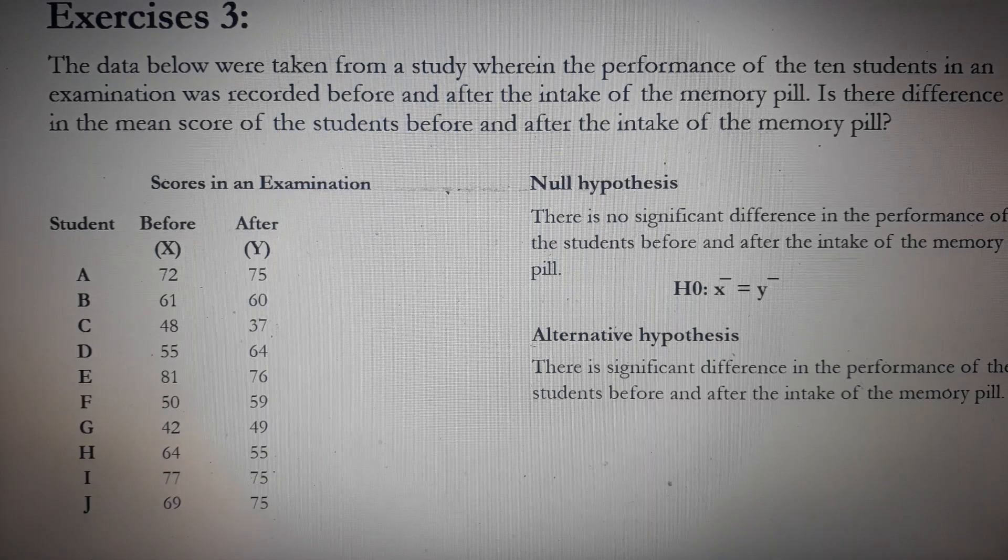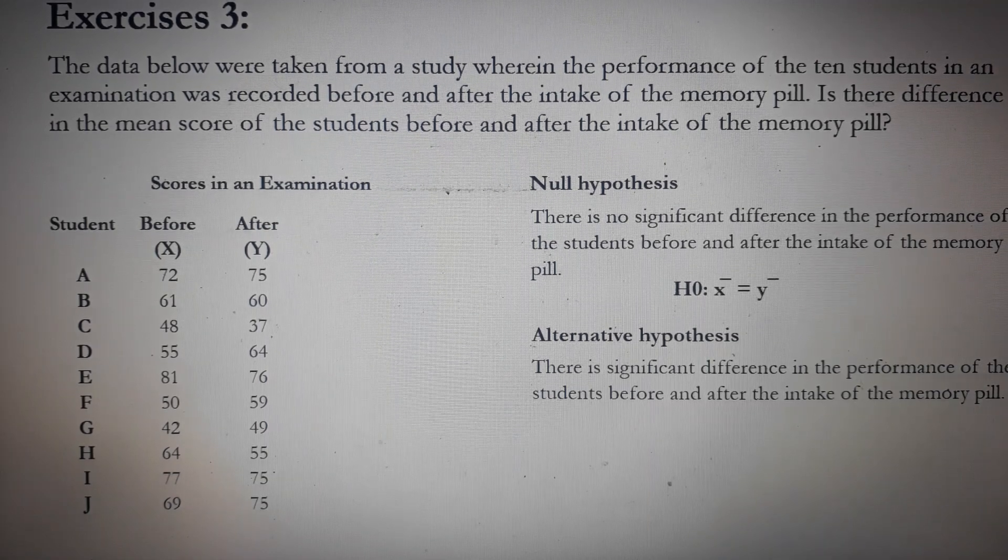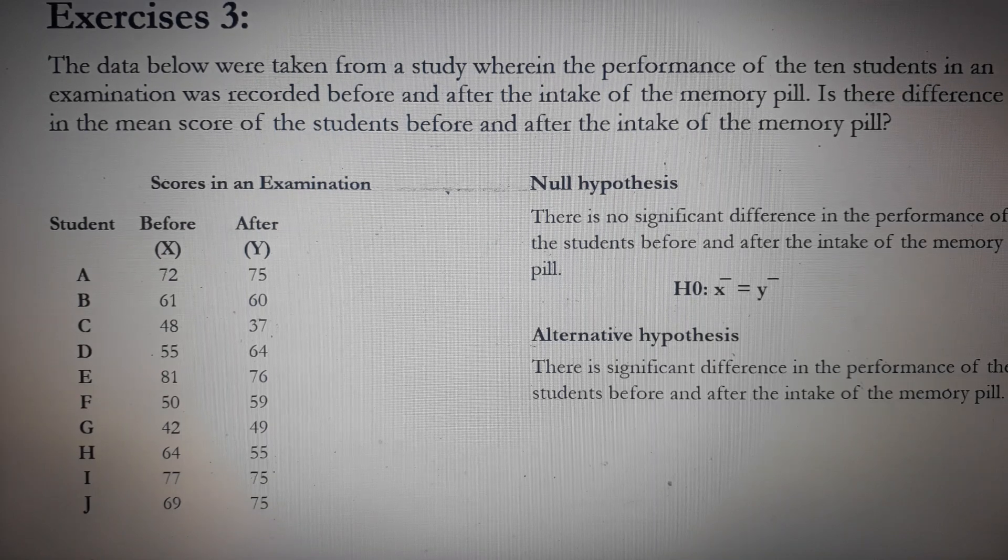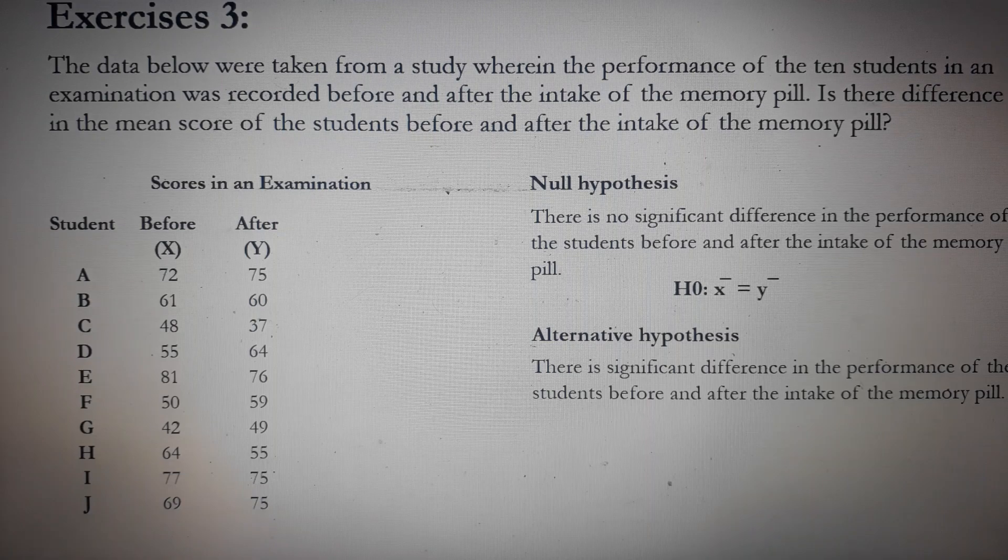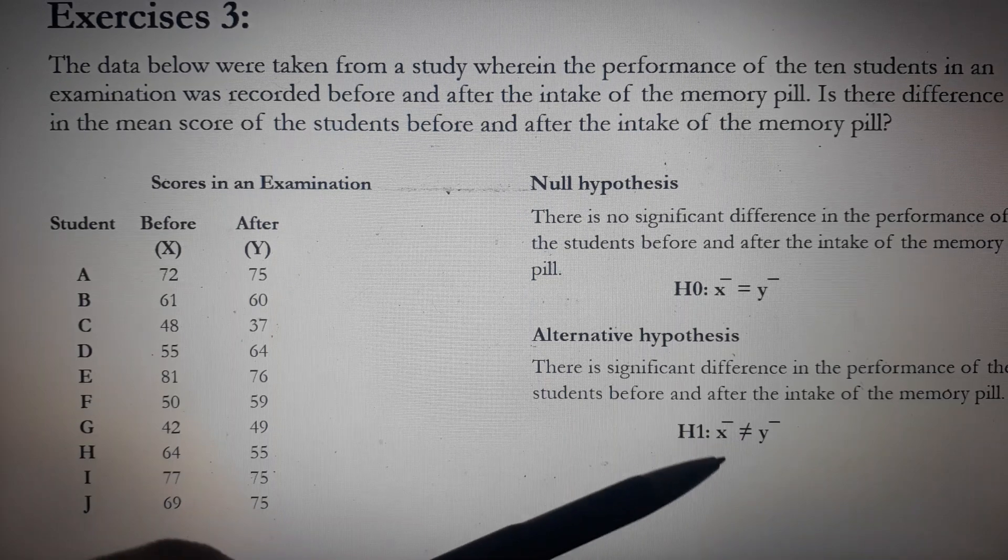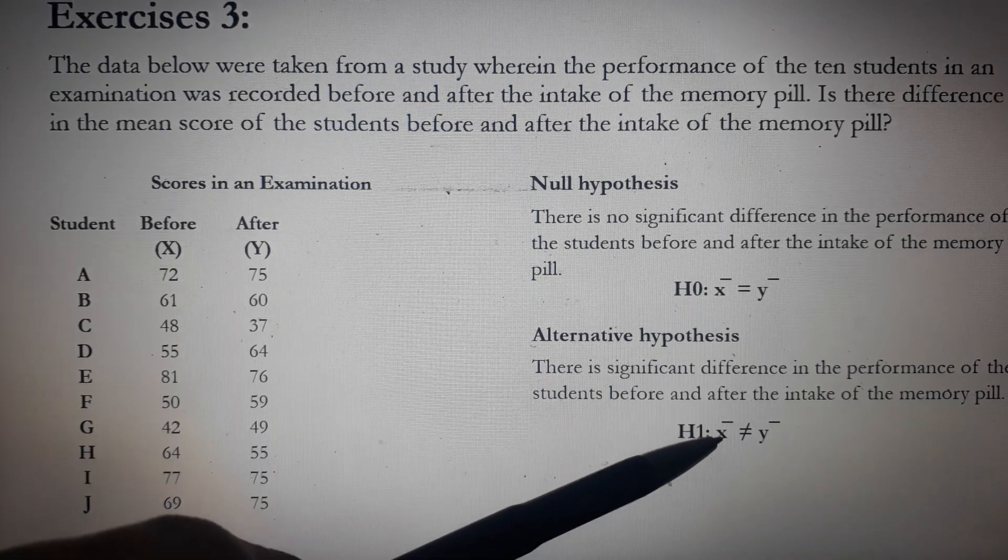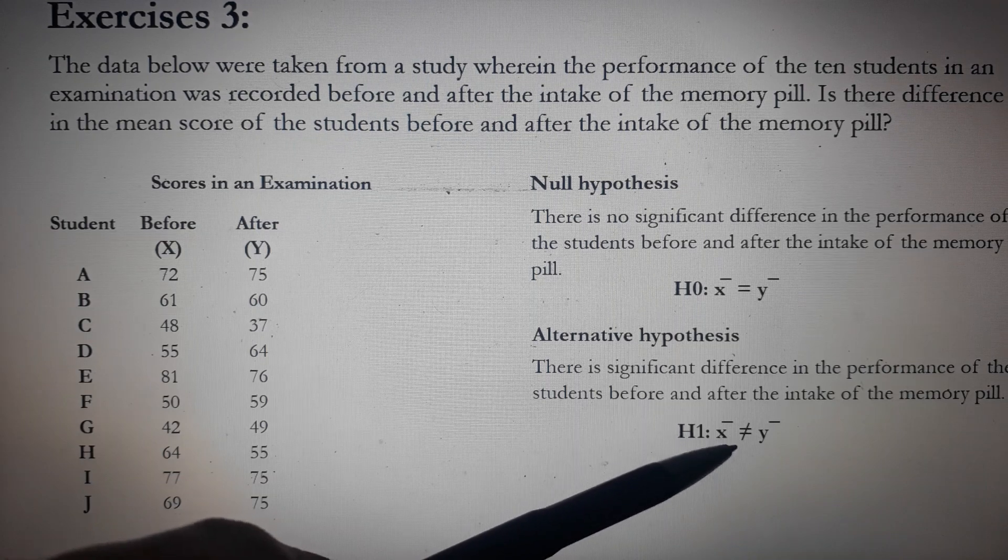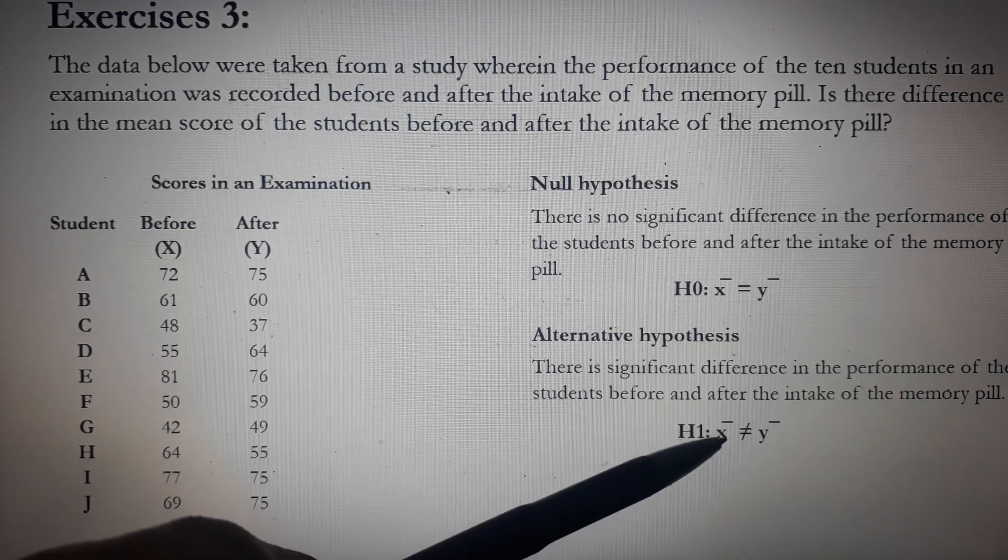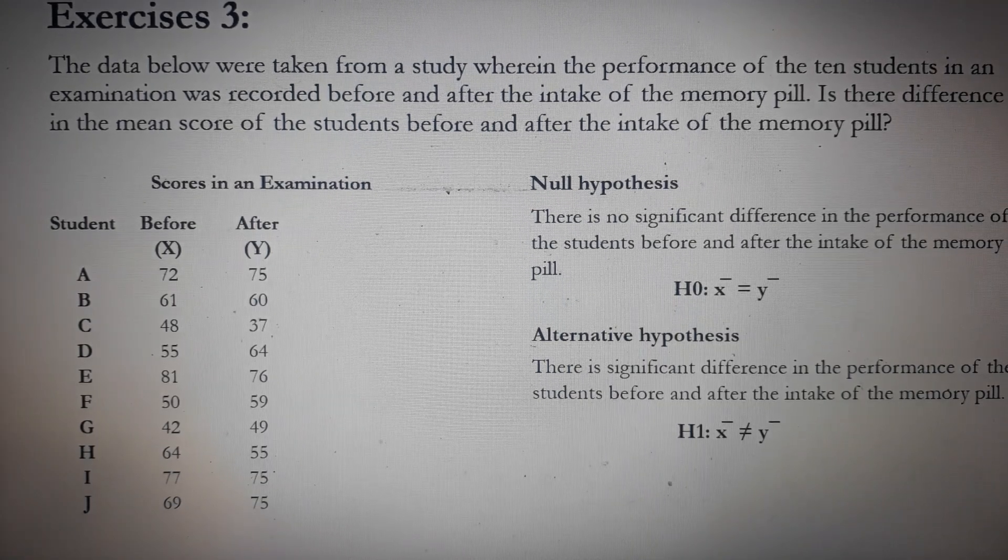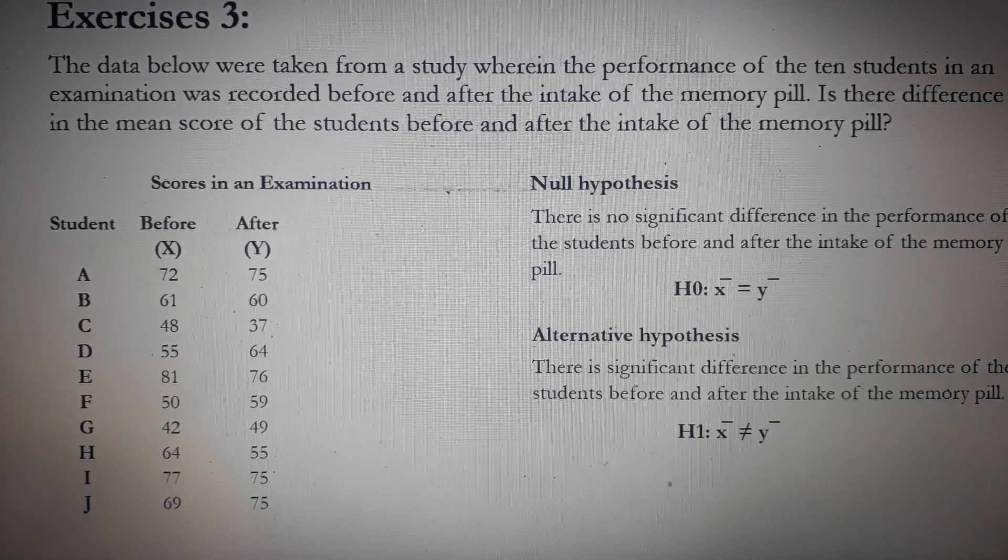The alternative hypothesis, on the other hand, you can remove the no, so my alternative hypothesis here is there is significant difference in the performance of the students before and after the intake of the memory pill. In symbol, H1 says here that the mean performance before the intake of memory pill is not equal to the mean performance after the intake of the memory pill.